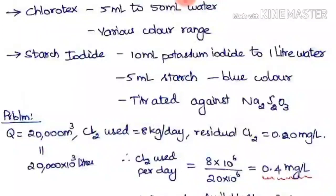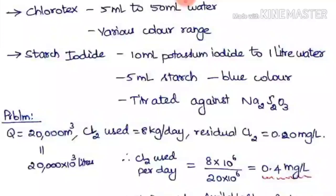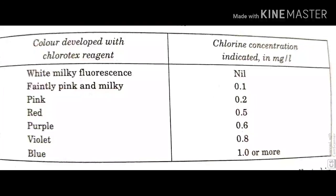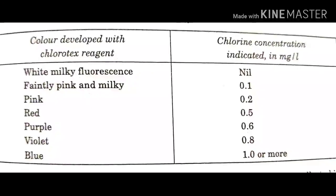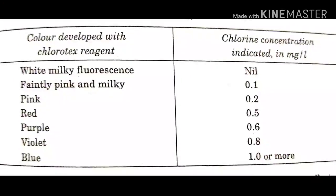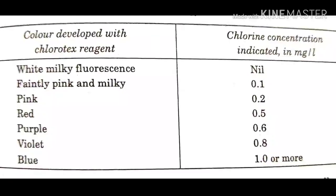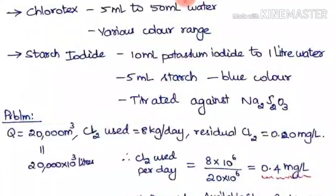In the Chlorotex test, various color ranges are obtained. Based on the color — which may be red, purple, violet, blue, pink, or other variations — you can directly find the amount of chlorine present. A table shows the respective colors and their corresponding chlorine concentrations.